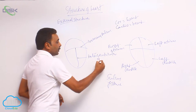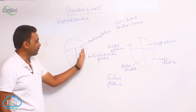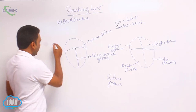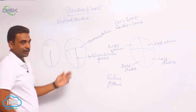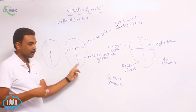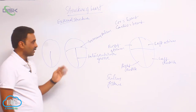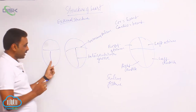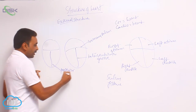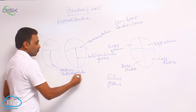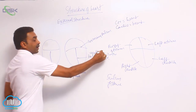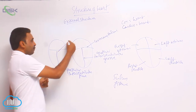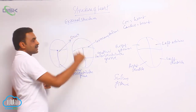Between the two ventricles there is also a groove called the interventricular groove. This groove is present both anteriorly and posteriorly, giving us the anterior interventricular groove and the posterior interventricular groove. On the posterior side, the coronary sulcus is still present, and where the posterior interventricular groove meets the coronary sulcus, that meeting point is called the crux.